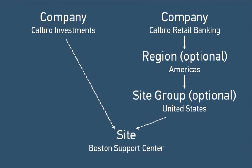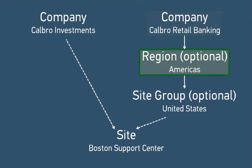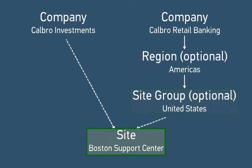In menus throughout ITSM and related applications, the company that you select restricts which regions are displayed, if any; the region that you select restricts which site groups are displayed, if any; and the site group that you select restricts which sites are displayed. Though they all use the same top-level companies, this location structure is different from the support group and business organization structures, which are described in separate videos.